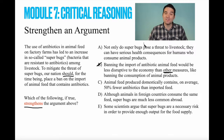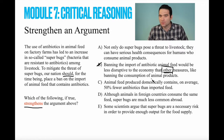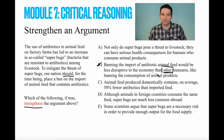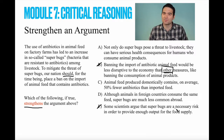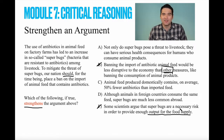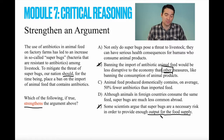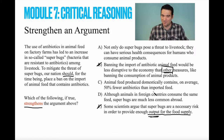On a critical reasoning question, if you see the word 'other' — another company, another town, another country — it's usually not the correct answer, because it distracts from the main focus of the argument. Answer option E has the same problem: some scientists argue that superbugs are a necessary risk in order to provide enough output for the food supply. We don't care about the food supply output. We care about protecting ourselves from superbugs. So answer option E is out.